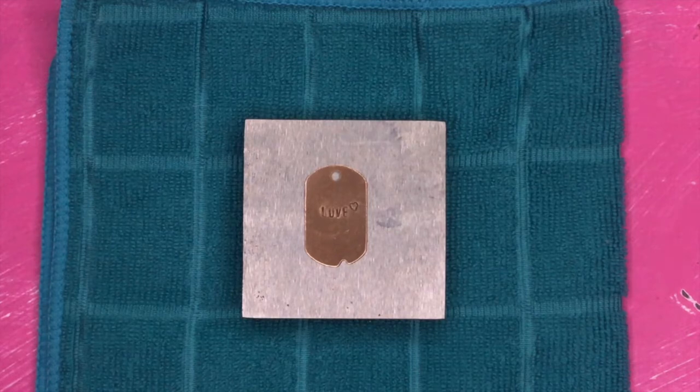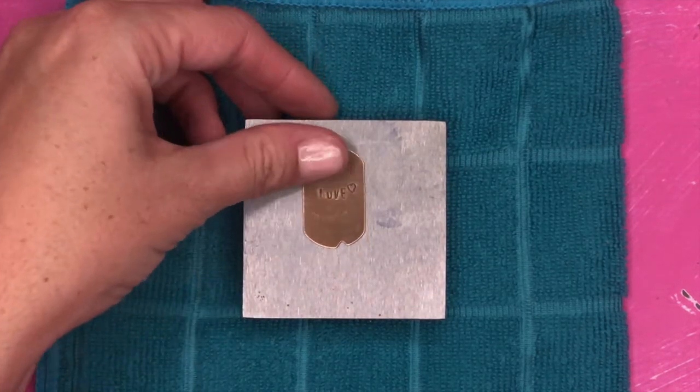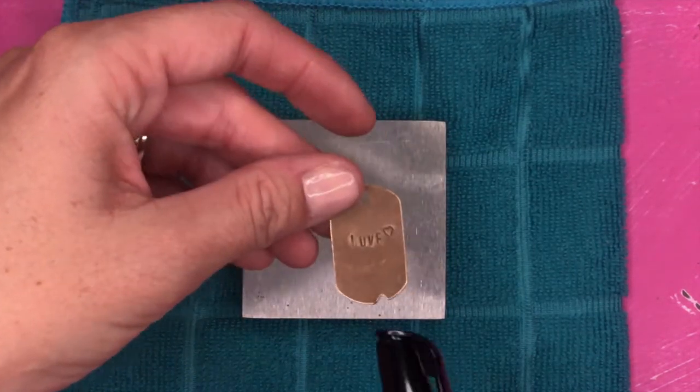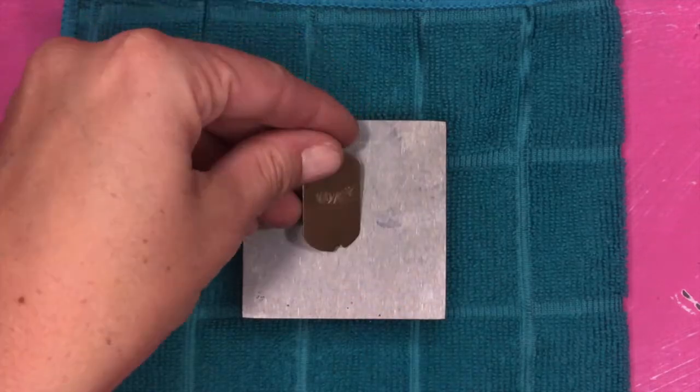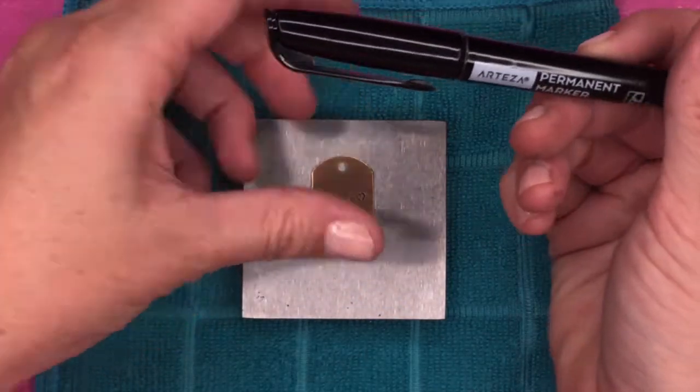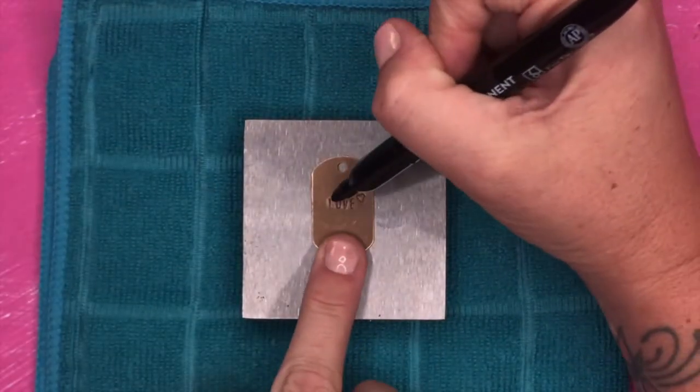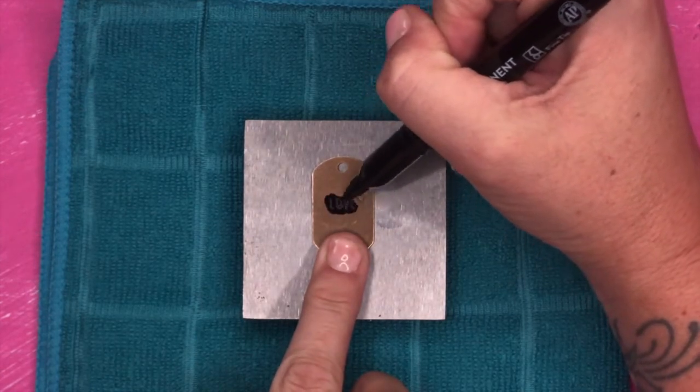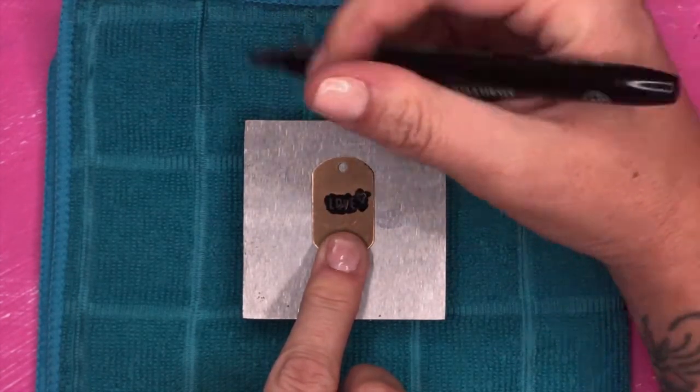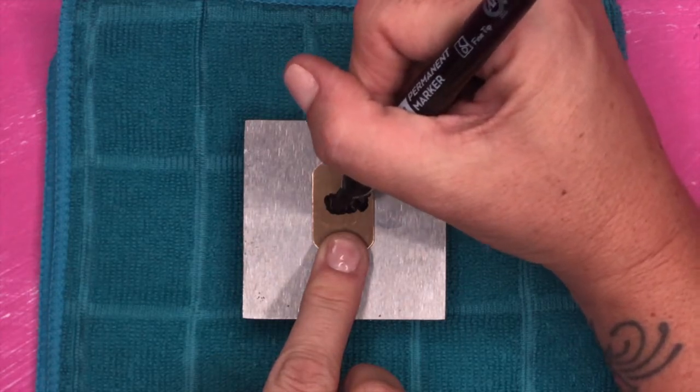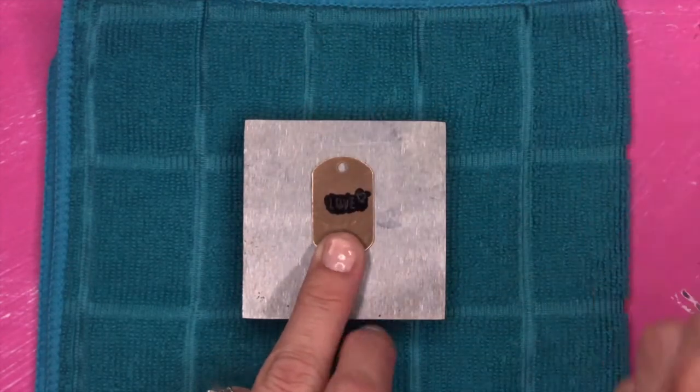Now you're ready to darken your letters. You can see after we stamp, you can see the indention of our letters, but it's just not quite dark enough. So that's where our permanent marker comes in. You're just going to take your permanent marker and color over your impressions, making sure that the permanent marker gets all the way inside your impression.